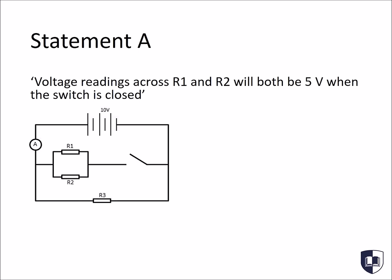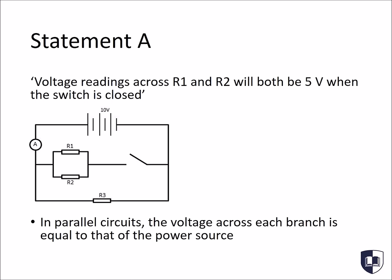Let's now look at statement A. The voltage readings across R1 and R2 will both be 5V when the switch is closed. This question once again relies on the same theory we just looked at. In parallel circuits, the voltage across each branch is equal to that of the power source. So, the voltage across R1 and R2 will be 10V. It will not be split into 5V per branch, which makes this option incorrect.